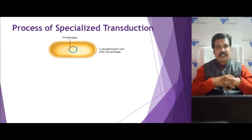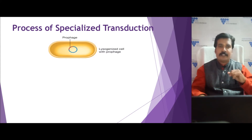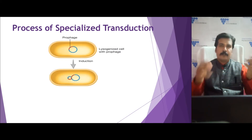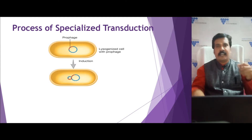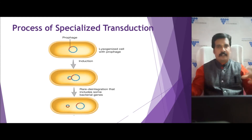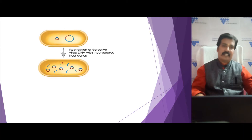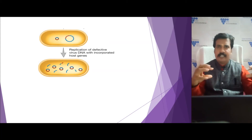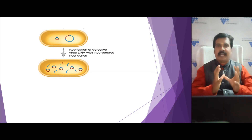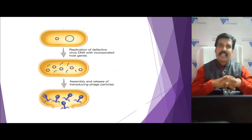Looking at this diagrammatically: viral infection occurs, and the viral DNA — shown in red color — undergoes lysogeny, forming a prophage. The prophage is then induced. During the induction process, the prophage excises. If it carries some bacterial DNA, it enters the lytic cycle, viral particles are produced, and those viral particles are also associated with some bacterial chromosomal DNA. This is what we call a specialized transducing phage particle.